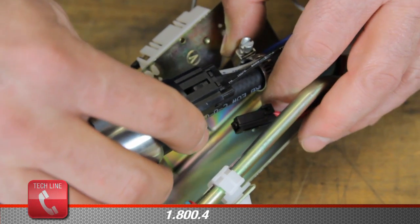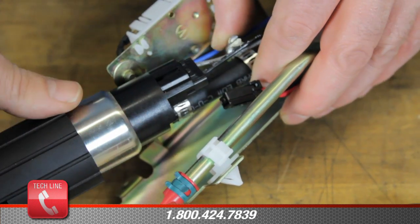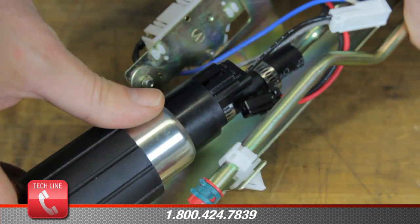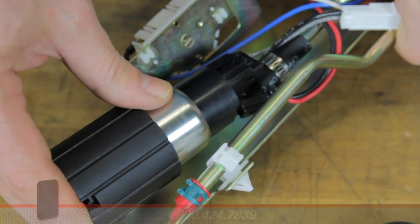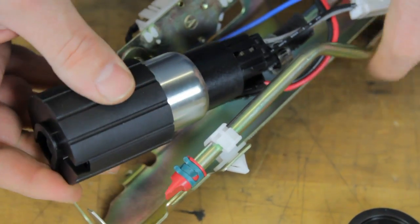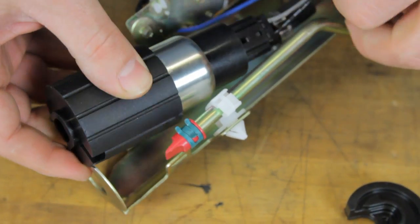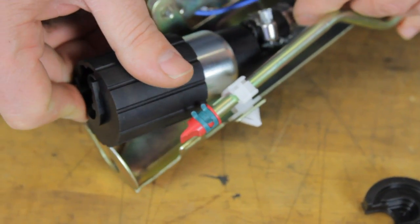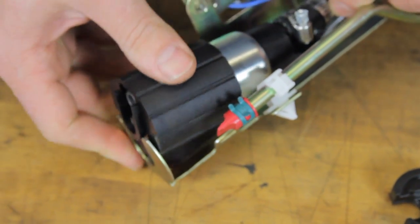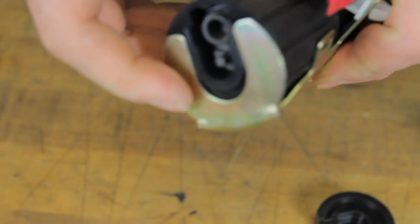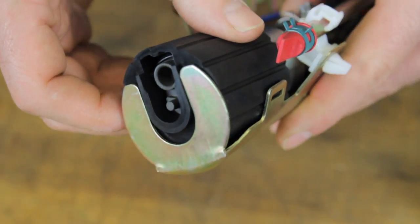We will install the new AirTex fuel pump into the hanger assembly. Slide the hose onto the outlet line. Slide the pump up. Then be sure and locate at the bottom of the assembly your isolator in the proper position.